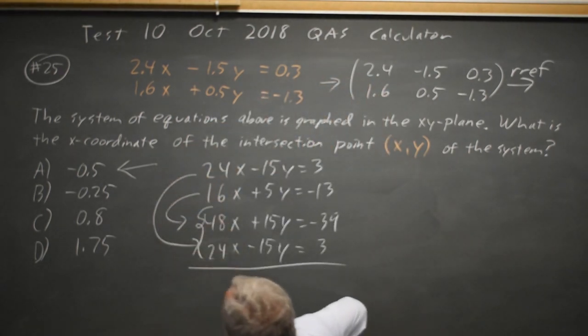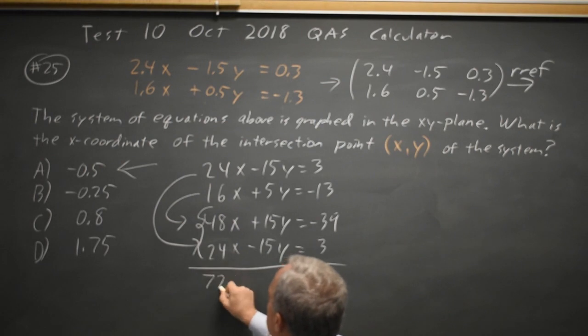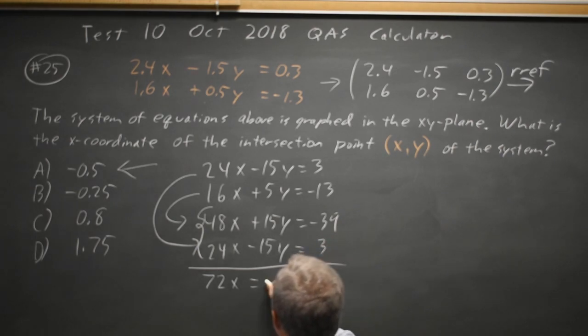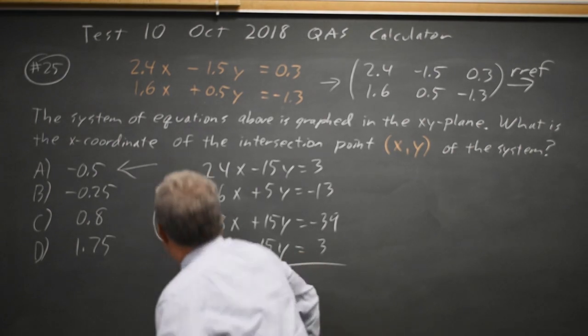48 plus 24 would be 72x. 15y minus 15y is 0y. Negative 39 plus 3 is negative 36. To get x by itself, I divide both sides by 72. x equals negative 36 over 72 is negative 1 half, which is, again, choice A.